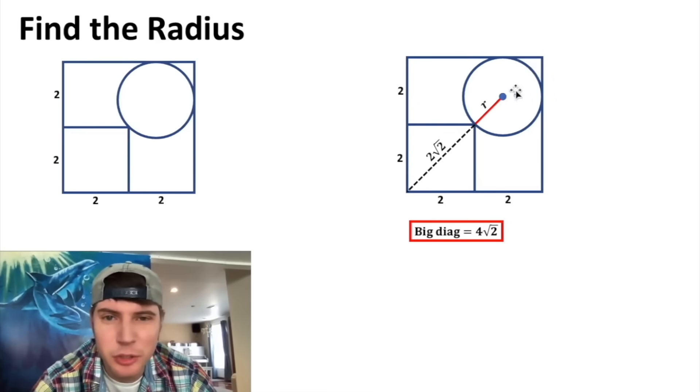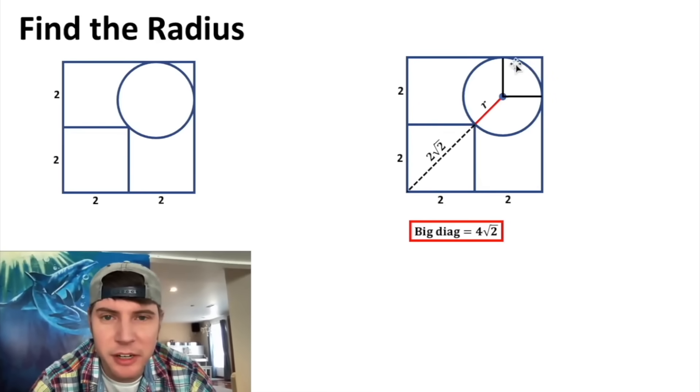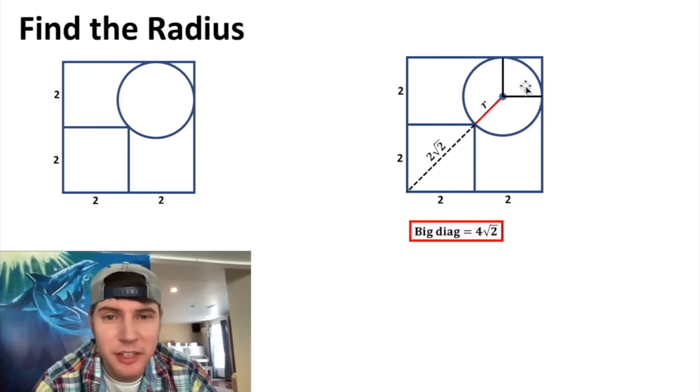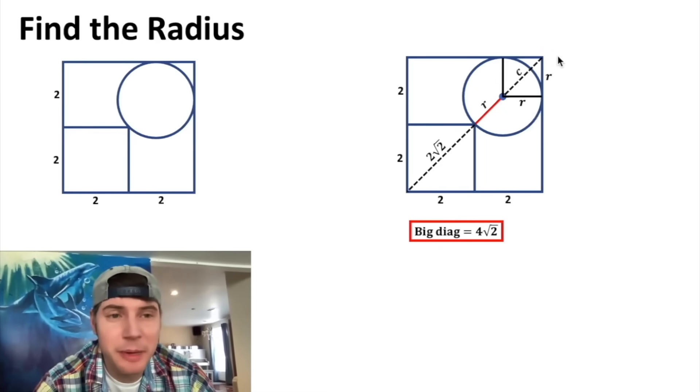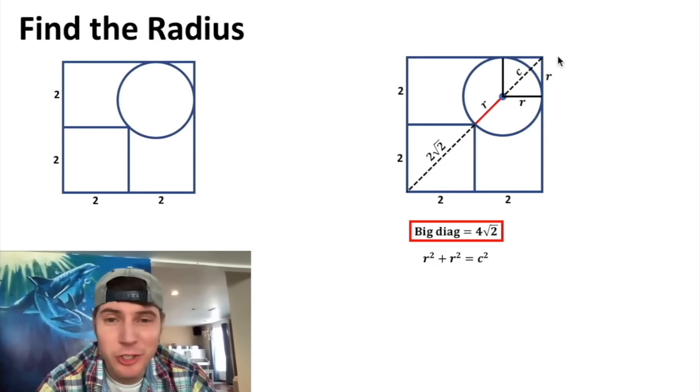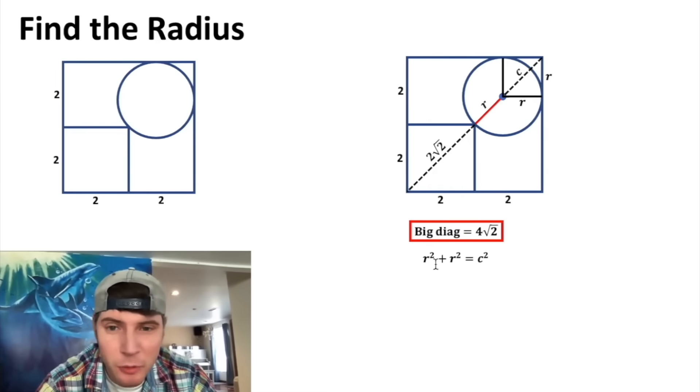So we know this, we know this, we just got to find this piece right here. Well that's not too bad because we can make a square right here. We know each of these are equal to the radius as well, so we can call both the sides of this square r. Then we can do another diagonal. We'll move this r over to here, and if we make the diagonal equal to c, then we know that r² + r² = c².